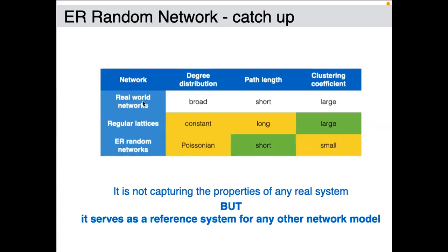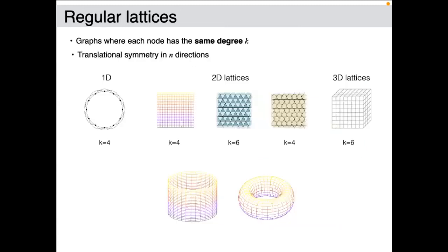In real networks we have three key components: a broad degree distribution with hubs and many nodes of small degree, short path length, and a large clustering coefficient. The Erdős-Rényi random graph gives us short path length but not the right degree distribution or the right clustering coefficient. A basic type of graph that does reproduce high clustering is a regular lattice — for example, in one dimension you place nodes on a circle and connect each to the k closest neighbors.